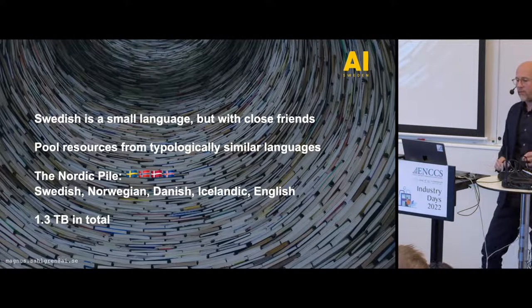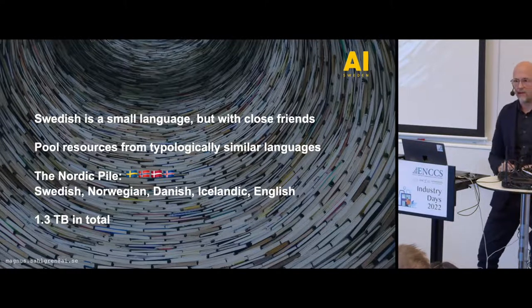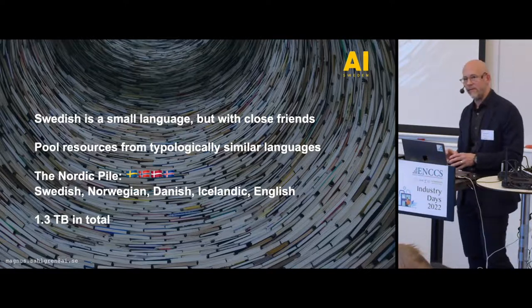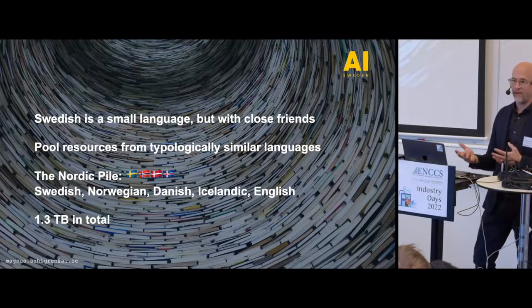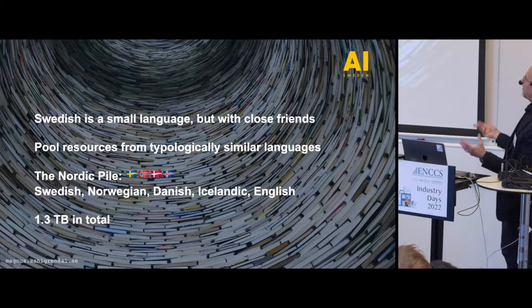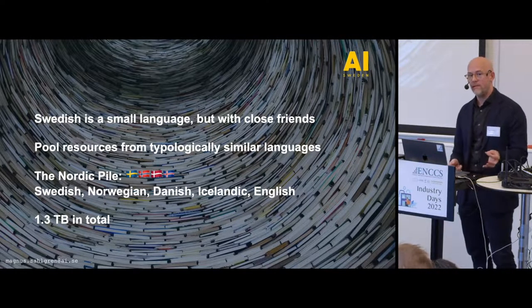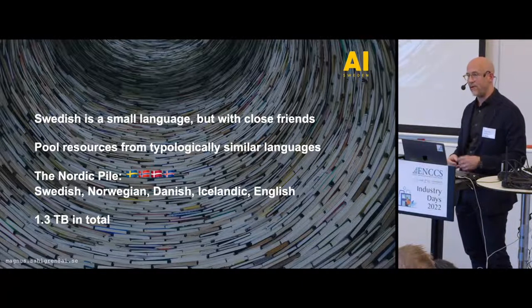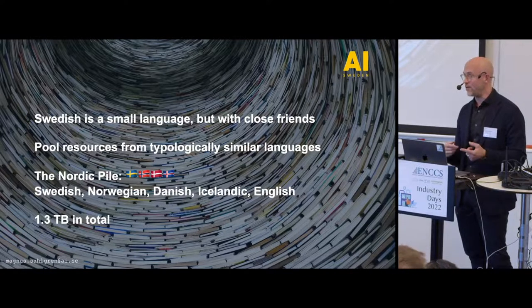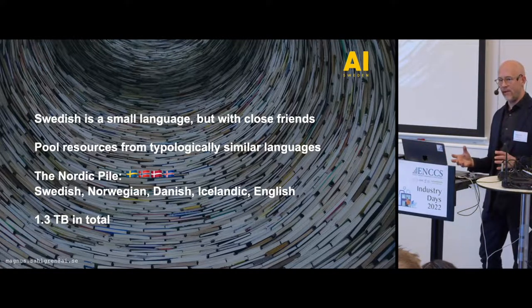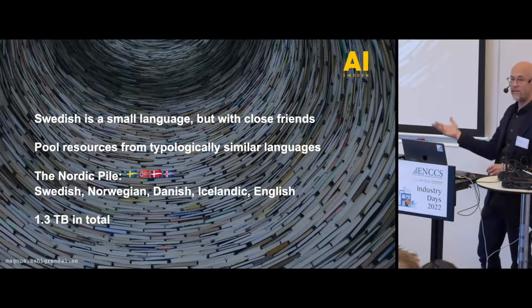One of the most challenging parts is finding enough data. Swedish is a small language with a limited number of speakers. The National Library has data, but it's not available outside the library, so we can't use it. What we've done is take advantage of the fact that Swedish is typologically very similar to the other North Germanic languages, so we're training a Nordic language model. If you look at the dialectal variation in Swedish, you have dialects that are even closer to Norwegian than to Swedish — like Jämtslenska, for example. So it makes sense, and it also gives us more data.